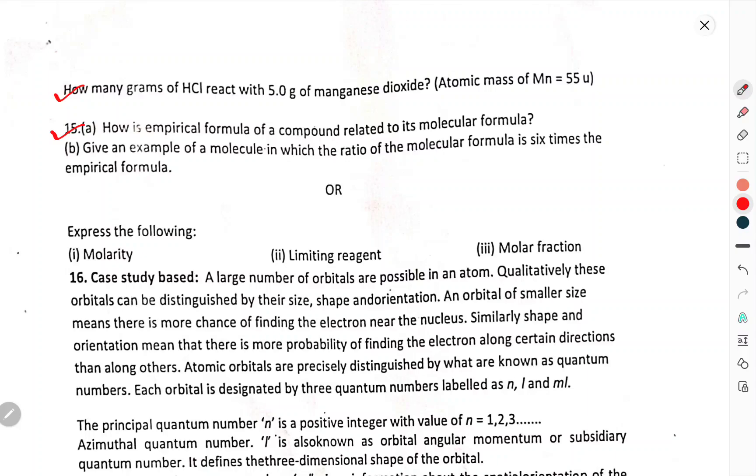How is empirical formula of compound related to its molecular formula? Give an example of molecules in which the ratio of molecular formula is 6 times the empirical formula.